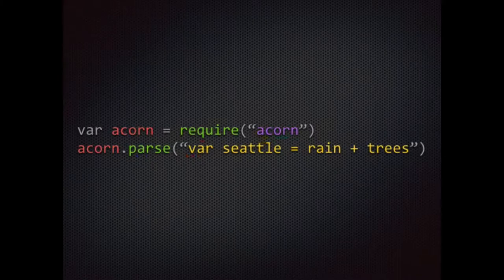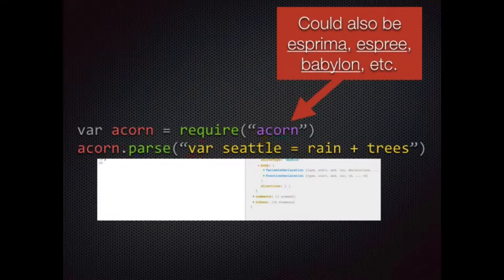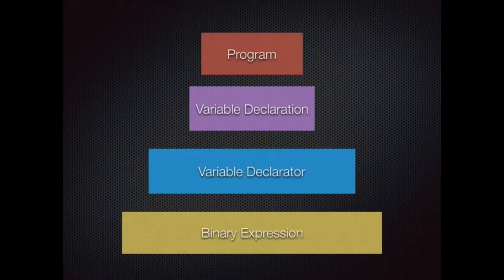This is how you get your AST. You put your code through something like Acorn. There are also other parsers — Esprima, Esprit, and Babylon, which is the fork of Acorn that Babel uses. But they're basically all the same API. You can just require the parser, run something like Acorn.parse, shove your code in there, and then you're going to get this tree out the other side.